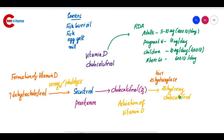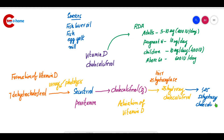Then, 25-hydroxy calciferol is converted into the active form of Vitamin D — calcitriol — with the help of the enzyme 1-alpha hydroxylase. This enzyme converts 25-hydroxy calciferol into 1,25-dihydroxy calciferol, meaning hydroxylation occurs at one more position. This 1,25-dihydroxy calciferol is the active form of Vitamin D, known as calcitriol. Calcitriol is a hormone.